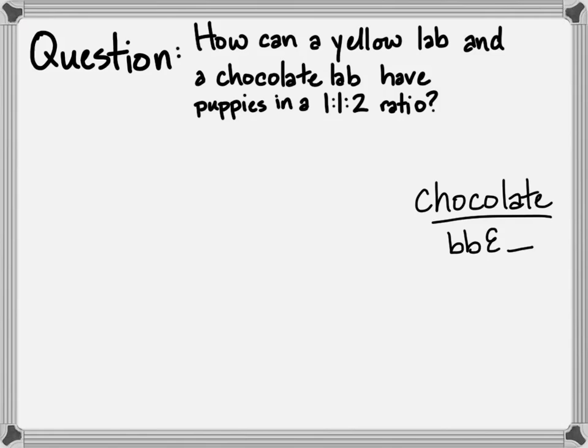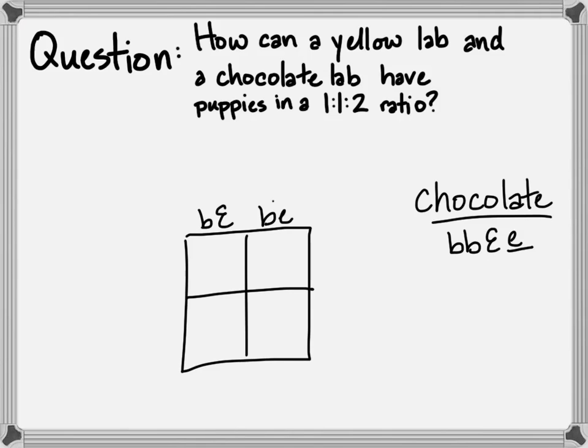So all of that points to a heterozygous crossed with a homozygous recessive. And so I've gone ahead and worked out the chocolate lab must be heterozygous because it has to contribute a lowercase e to have those yellow puppies. And both of its gametes, both variations, will have recessive b's because that is all it has to give to its offspring.